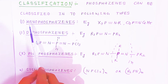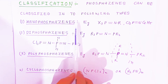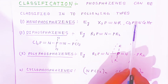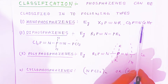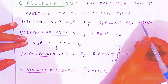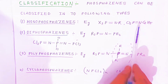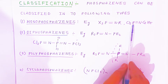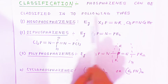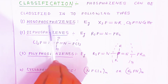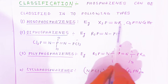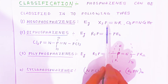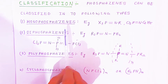First we are going to see Monophosphazenes. In Monophosphazenes there is only one repeating unit, that is Phosphorus-Nitrogen (P=N). Nitrogen has a +3 oxidation state and Phosphorus has a +5 oxidation state. Since there is only one unit of Phosphorus-Nitrogen that is unsaturated, it is called Monophosphazenes.